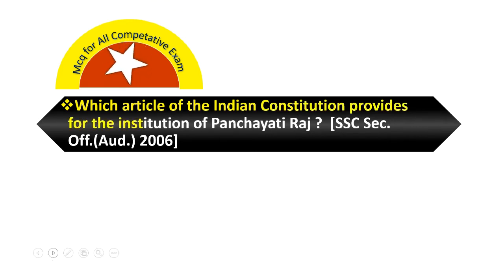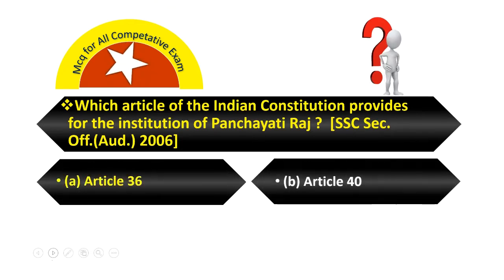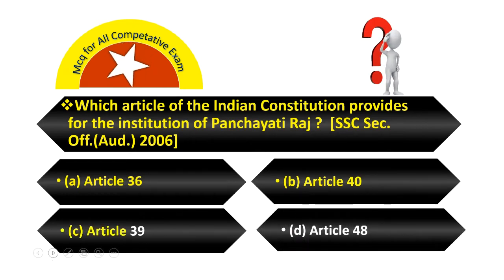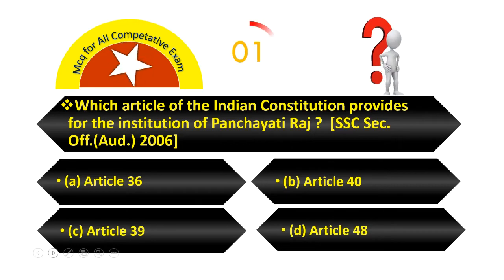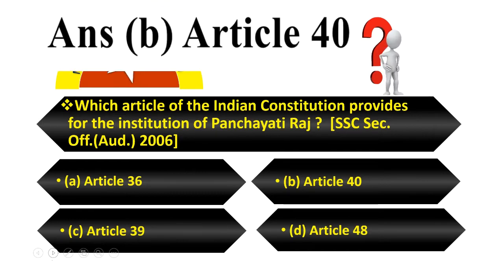Which article of the Indian Constitution provides for the institution of Panchayati Raj? Option A, Article 36. Option B, Article 40. Option C, Article 39. Option D, Article 48. Your answer is Article 40.